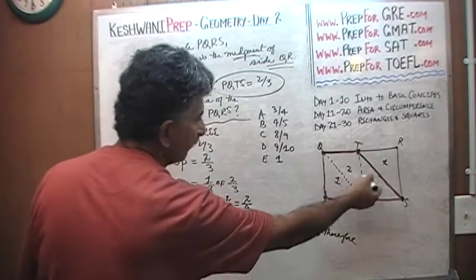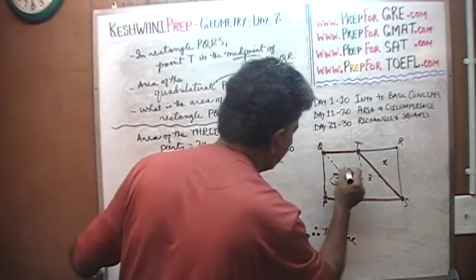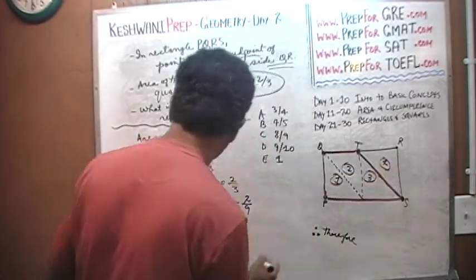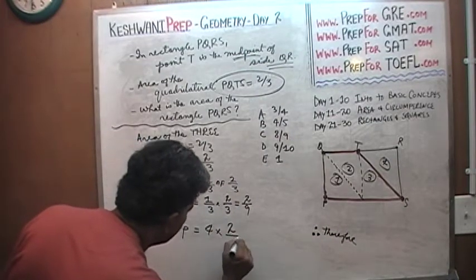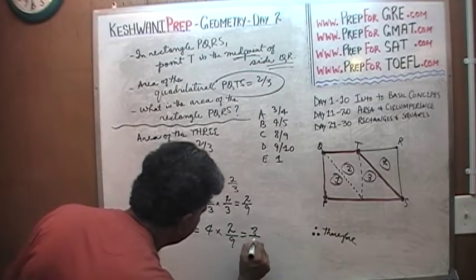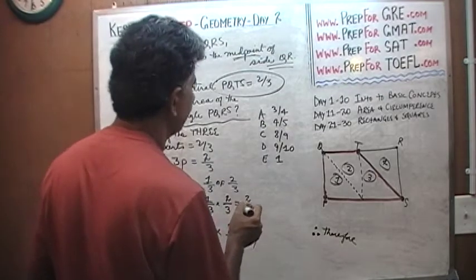And then finally, the whole thing that we're looking for is made up of four parts: one, two, three, four. Four parts. Finally, four parts must equal four times two-ninths. Voila. The answer is eight-ninths. Eight-ninths right here.